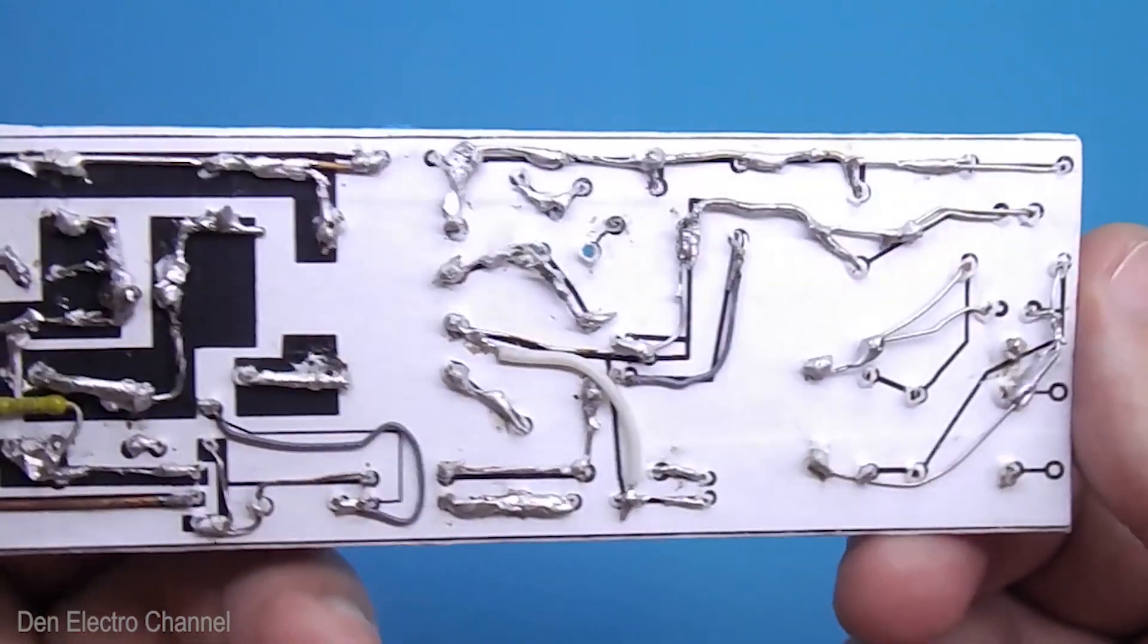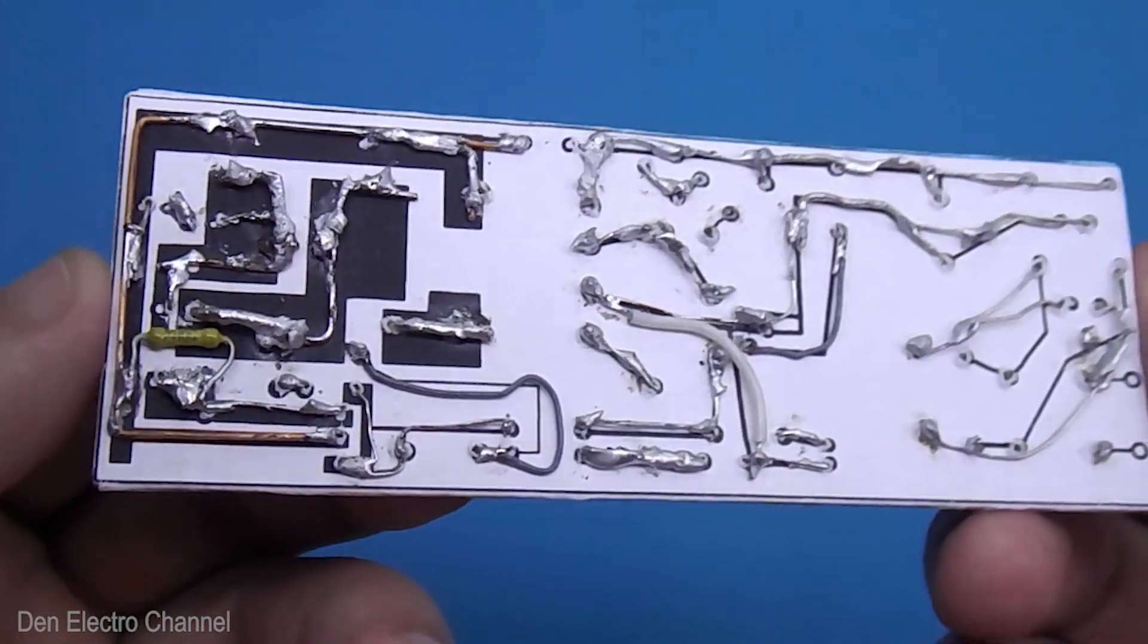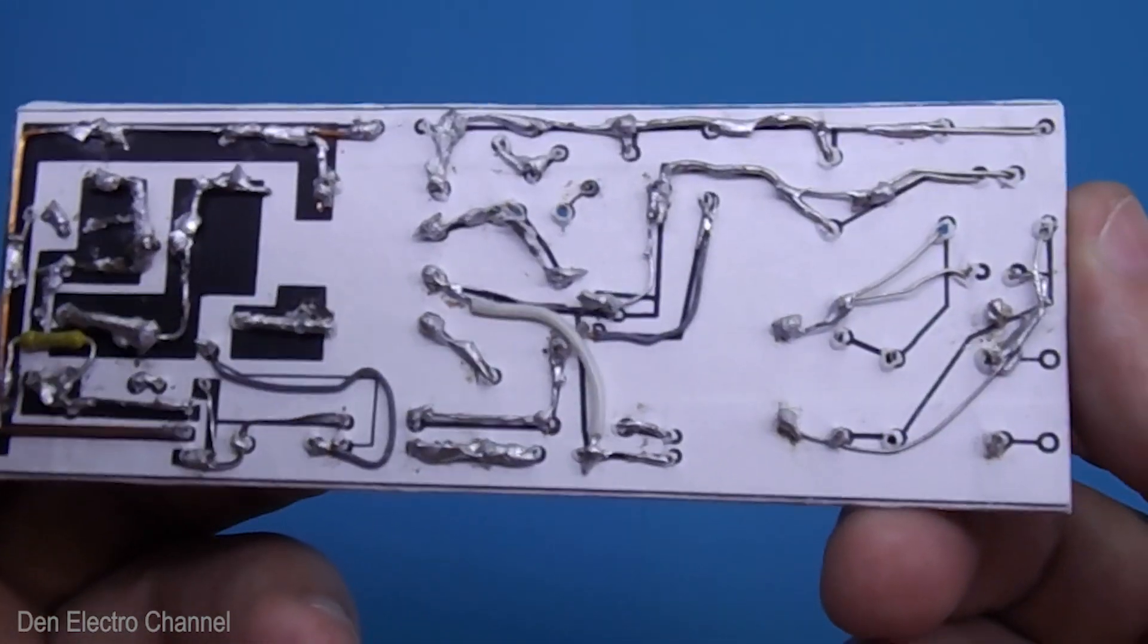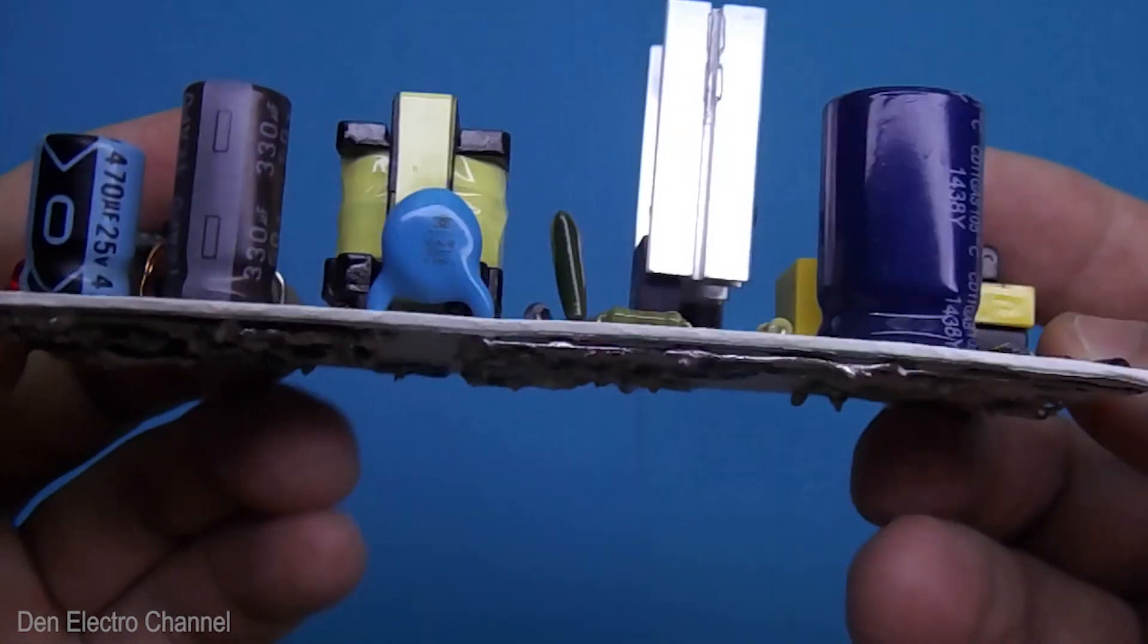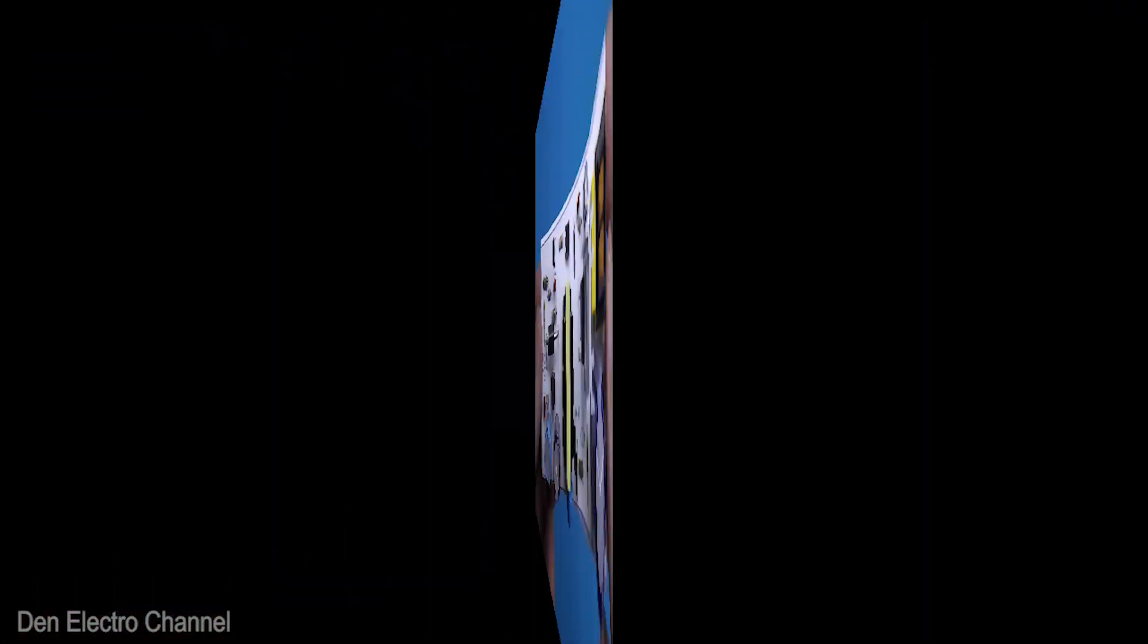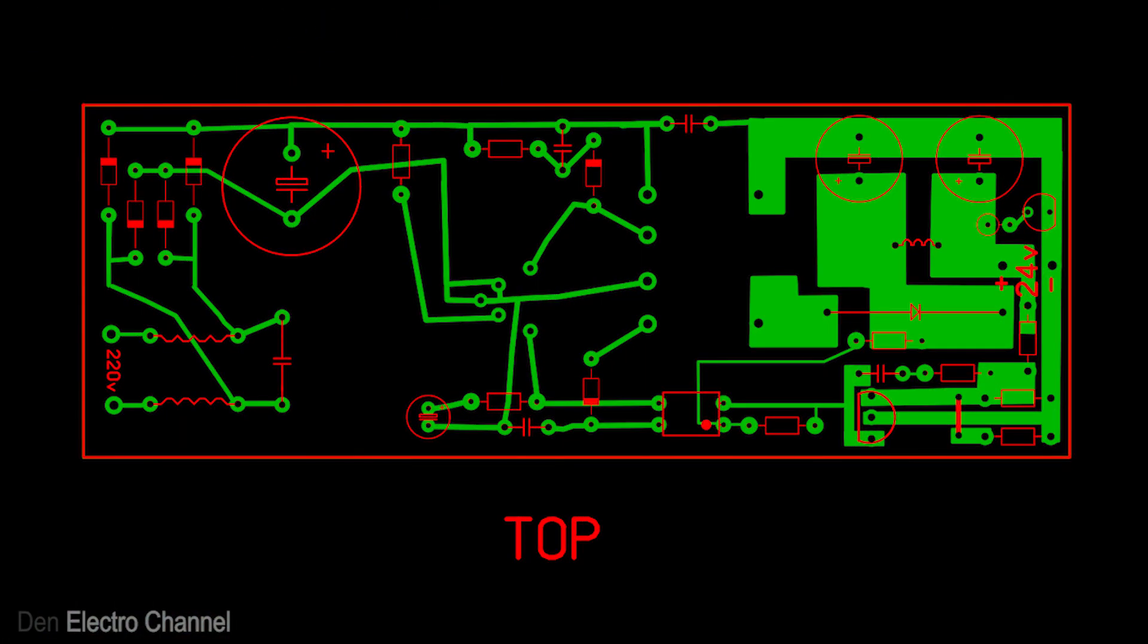On the reverse side, everything is connected by jumpers. Resistor R11 is also installed here. I will leave a link to the file with the printed circuit board in the description.